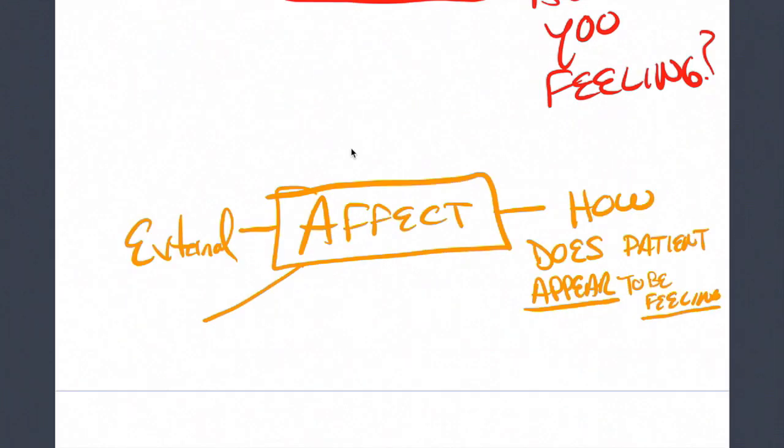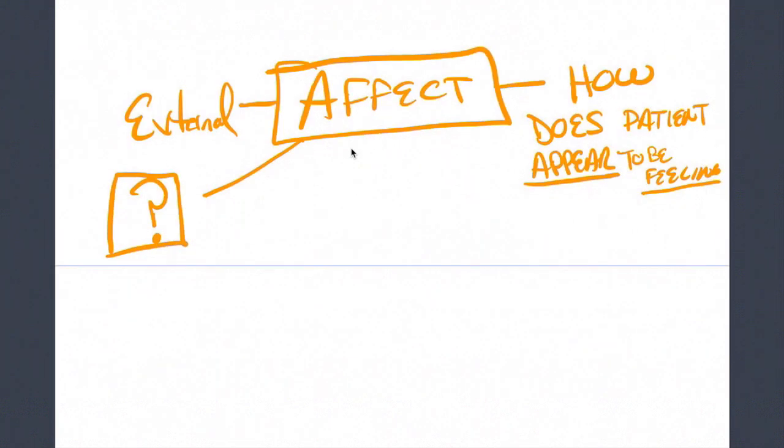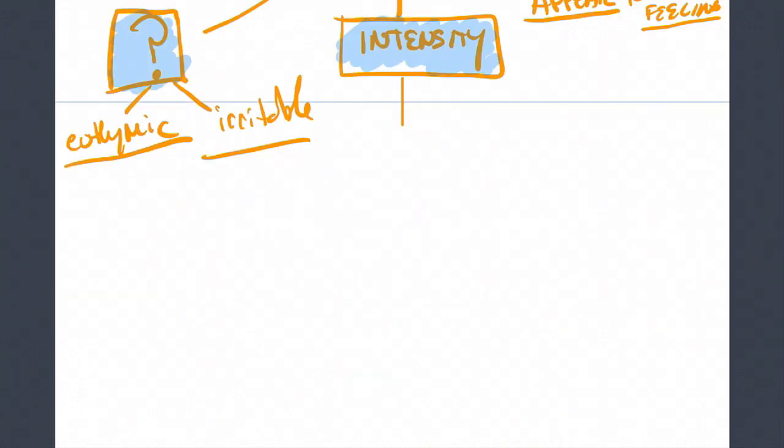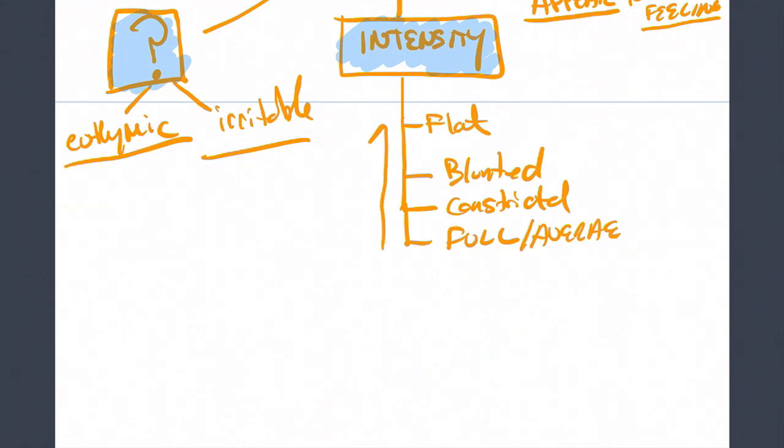The first component of affect is the actual description of the affect itself. So they could be normal or euthymic. You could be irritable. If someone's irritable, they would have an irritable affect, and that could be something that you document. You also want to look at the intensity of the affect. Intensity is basically how much emotion does the patient have the ability to show, or how much are they showing? A patient could have a flat affect, which they can't show or they're not showing any emotion at all, and that would be something you would see in a patient with schizophrenia, for example. Or it could be described as blunted or constricted or full, basically average. So it gradually gets worse as you think of it from going from the bottom to the top in this chart.